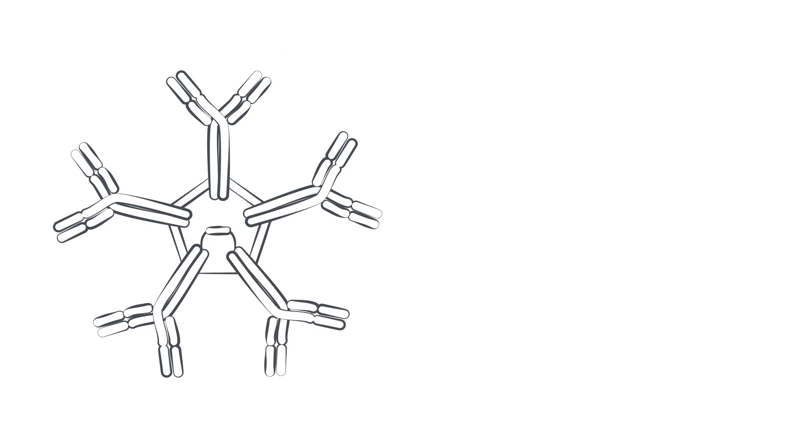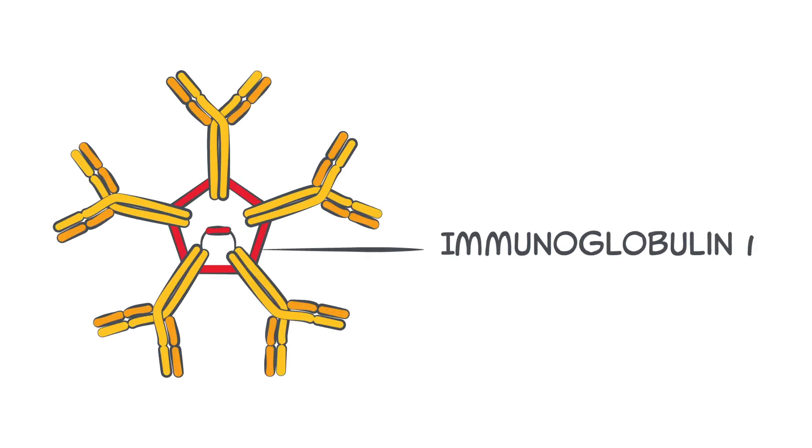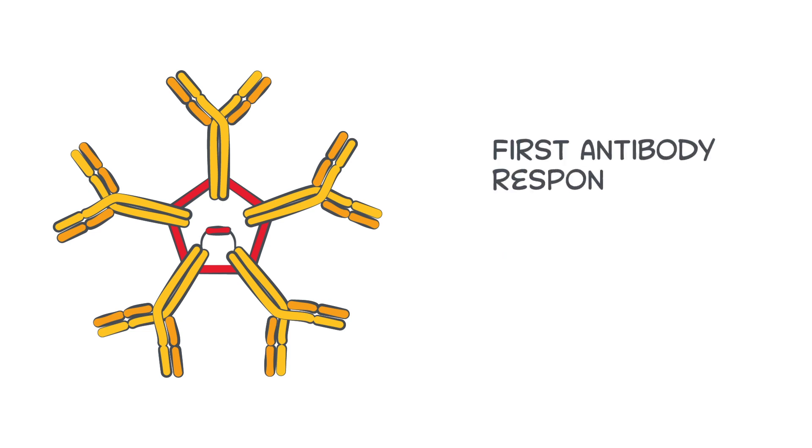Antibodies are proteins produced by the immune system. In general, immunoglobulin M, or IgM, are the first antibodies produced in response to an infection and are detectable four to seven days after an infection starts.